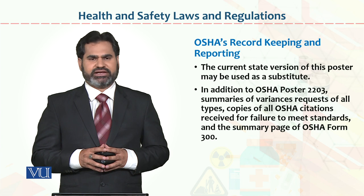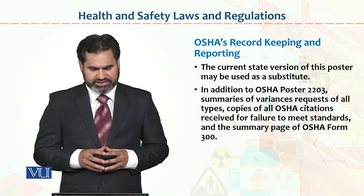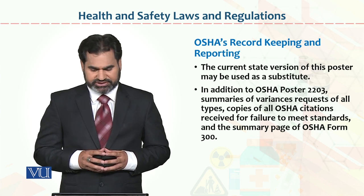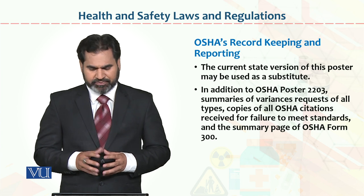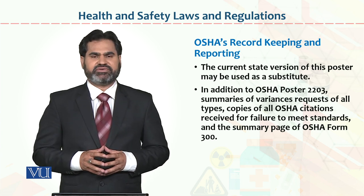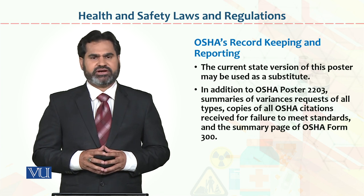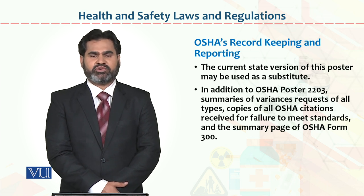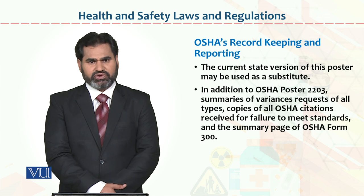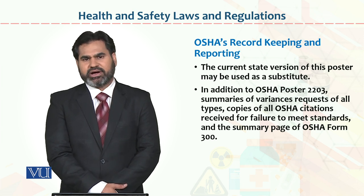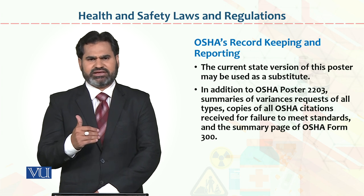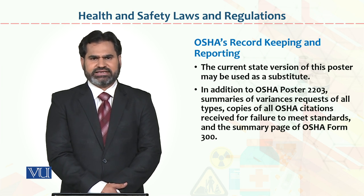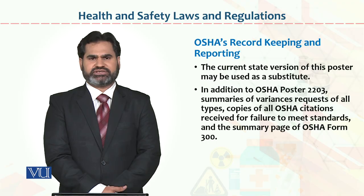In addition to OSHA Poster 2203, summaries of variance requests, copies of all OSHA citations received for failure to meet standards, and the summary page of OSHA Form 300 must also be posted. If anything is missing or needs to be enhanced for quality or improvement, all these forms — 301, 300, and 300A — are examples whose primary purpose is to ensure that records of any injury or illness are maintained within the organization.